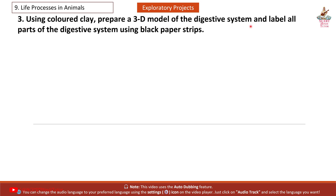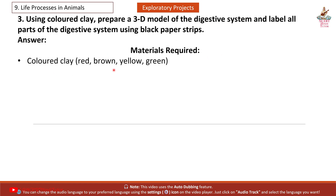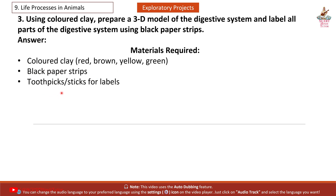Exploratory Project 3: Using colored clay, prepare a 3D model of the digestive system and label all parts using black paper strips. Materials required: colored clay — red, brown, yellow, green; black paper strips; toothpicks and sticks for labels.